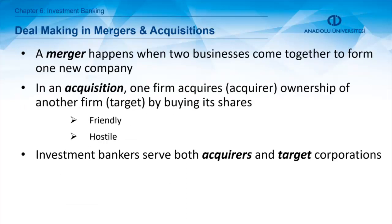Another function of investment banking is deal making in mergers and acquisitions. A merger happens when two businesses come together to form one new company. In an acquisition, one firm acquires ownership of another — the firm acquiring is called the acquirer and the firm being bought is the target. By buying its shares, the acquirer buys ownership of the target company. These acquisitions can be either friendly or hostile, and investment bankers can serve both acquirers and target corporations in the deal-making process.